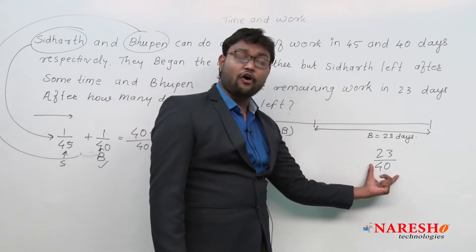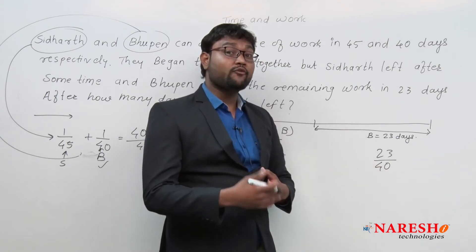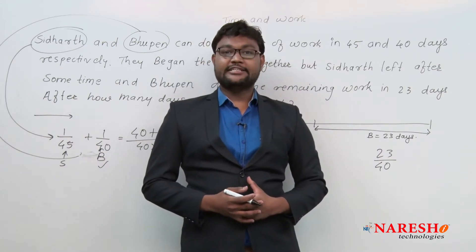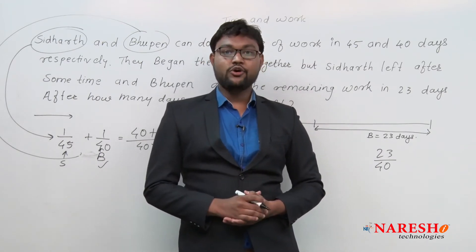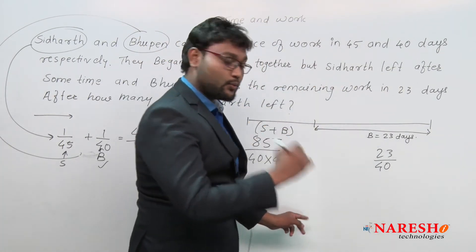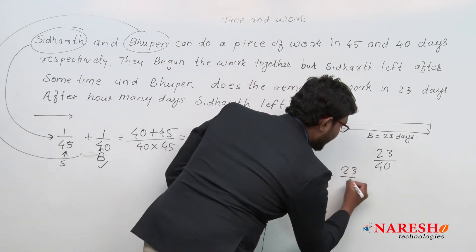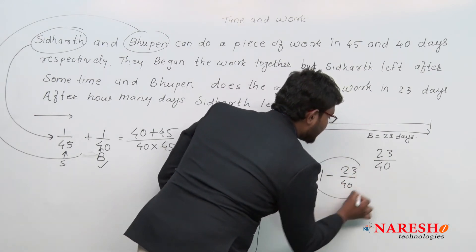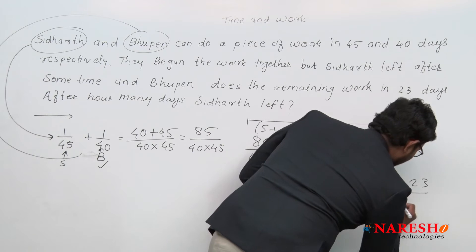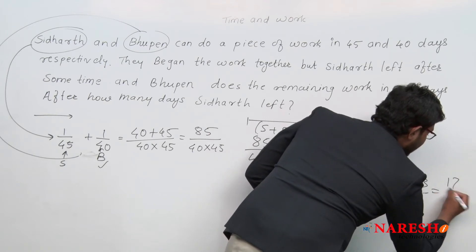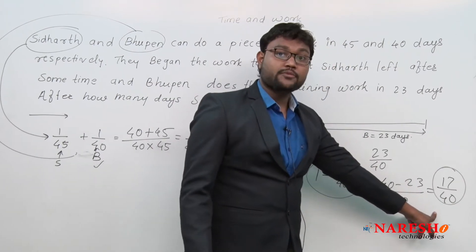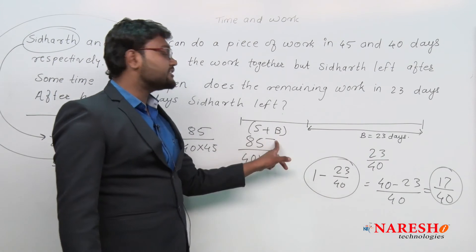If Bhupen is completing 23/40 of the work within 23 days, what is the work remaining? As we know, work is always considered as one single unit. So the complete work is 1, and 1 − 23/40 gives us the remaining work, which is (40 − 23)/40 = 17/40.